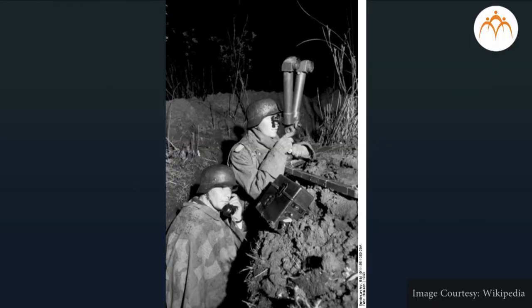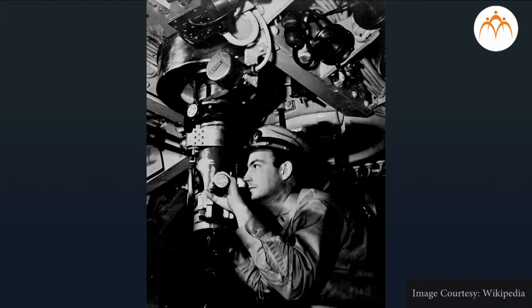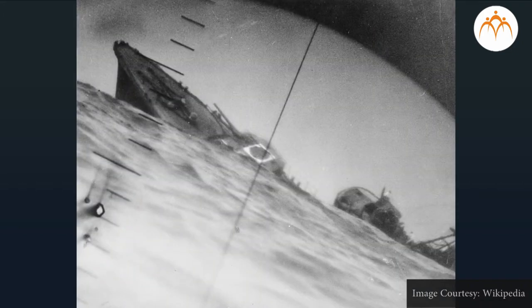In periscopes, plane mirrors are used to bend light so that an image of an object can be brought down to a lower level. It is used for observing enemy movements from trenches without any danger of being seen. Sailors on submarines use periscopes to see things above the water level.